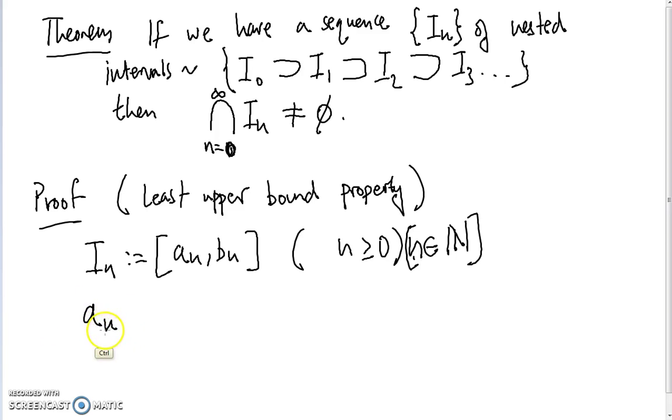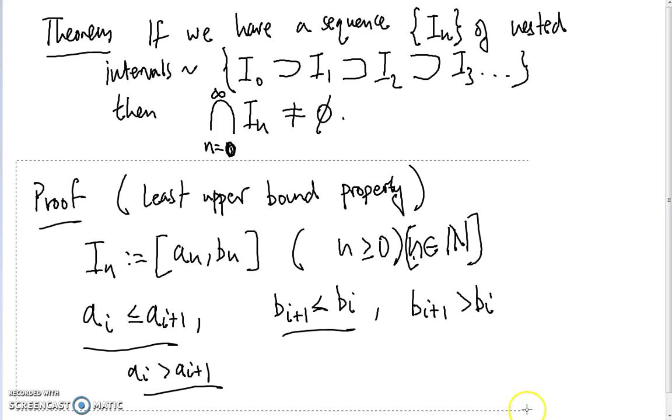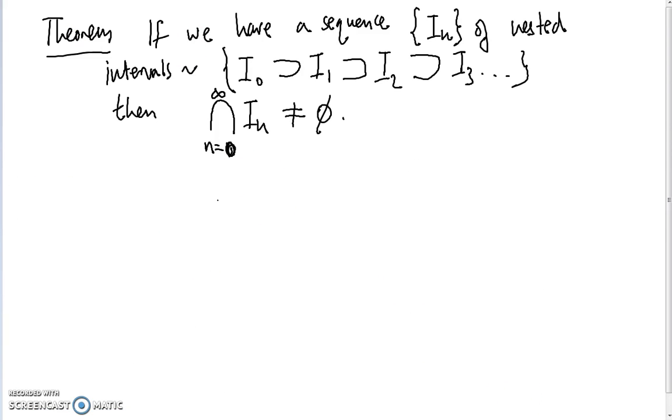One thing we notice is that a_i is always going to be less than or equal to a_{i+1}, and b_{i+1} is always going to be less than or equal to b_i. The reason these two things are true is because the next interval we draw has to be a subset of the previous interval.